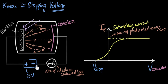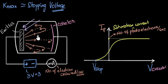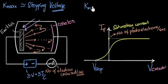Given the stopping potential, can we actually tell how much kinetic energy the fastest electron had? The answer is yes. Potential difference is an indicator of how much energy a charge is gaining or losing when it moves from one point to another. When I say 3 volts, it means a charge going through those 3 volts gains or loses 3 joules of energy per coulomb. So this fastest electron has lost 3 joules of energy per coulomb. Since the final energy is zero, it must have had 3 joules per coulomb to begin with — that is the kinetic energy of the fastest electron.